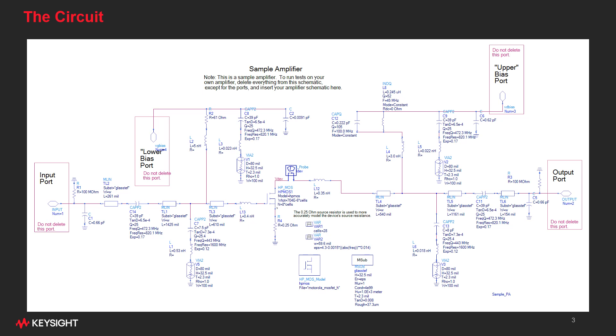For our first example, we have this amplifier circuit. You can see the active device along with a lot of discrete parts. It's a typical circuit. The bias networks are shown, the impedance matching networks.